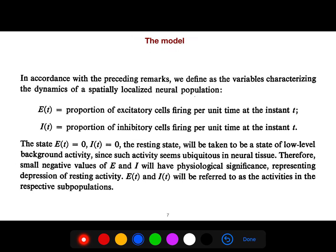We say proportion of excitatory cells firing per unit time at instant T. This is the proportion of excitatory cells that are firing at time T, and this is the proportion of inhibitory cells firing at time T. The resting state is when there is no population of inhibitory neurons and they are at rest. The same thing for excitatory.